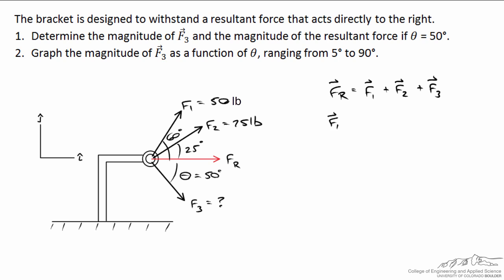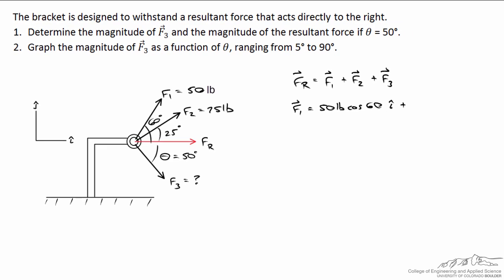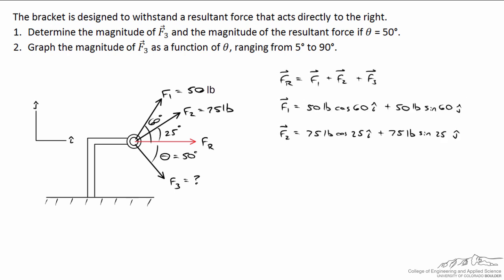For all three of these vectors I'm going to break them into their component form. I'll do F1 first of all, and we have in the i hat direction it's equal to 50 pounds times the cosine of 60 degrees, and in the vertical direction, in the j hat direction, I've got 50 pounds times the sine of 60 degrees.